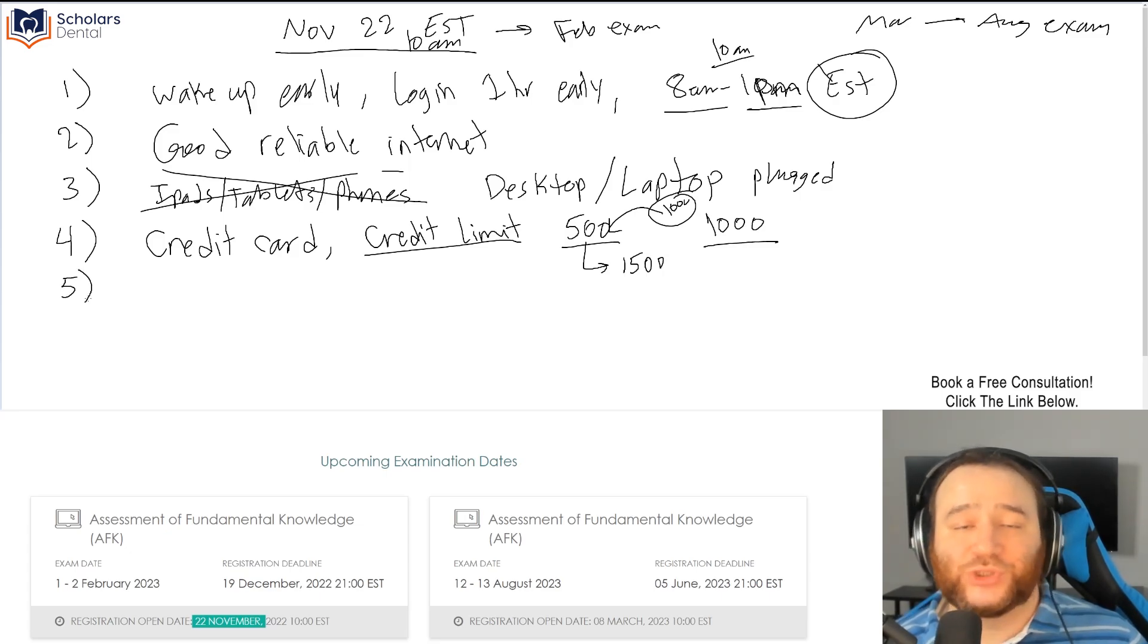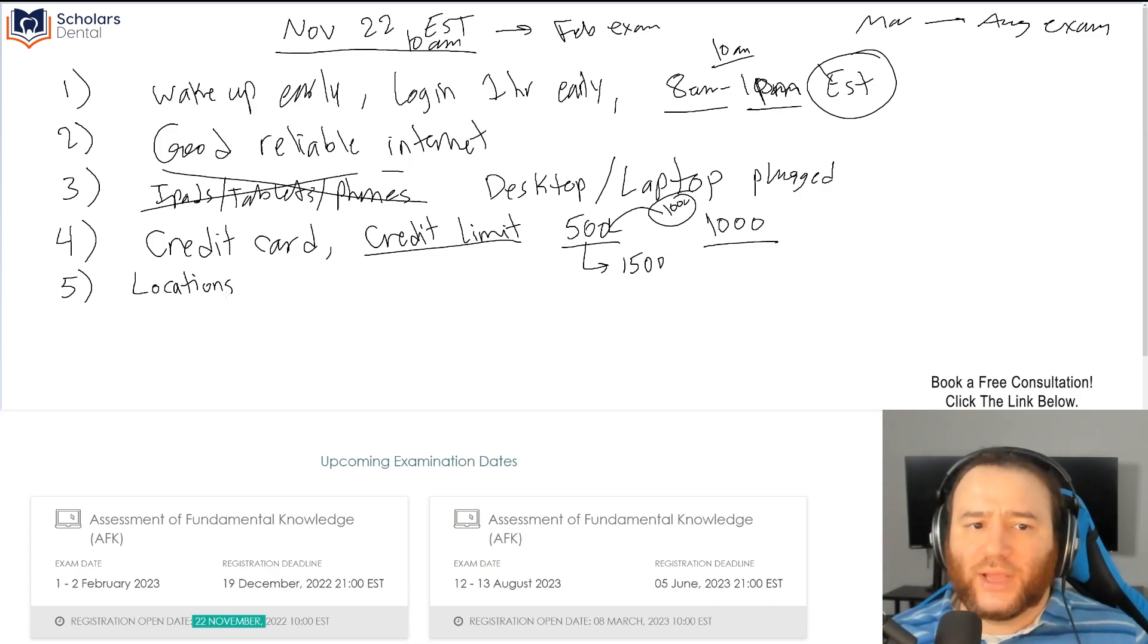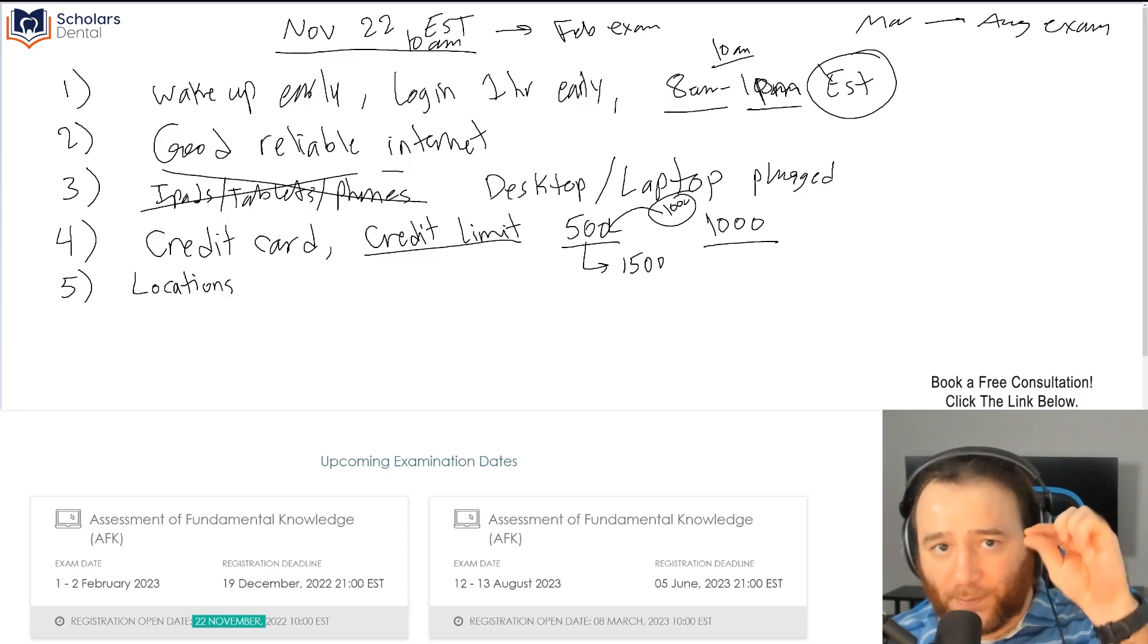Tip number five, which is very important and a lot of people forget to do: know which locations you want before. Don't wait until you get all the locations and now you're thinking which one do I want. There's a good chance you might not find your favorite location. Let's say you live in Toronto and you want to go to Toronto. What if Toronto is all booked?